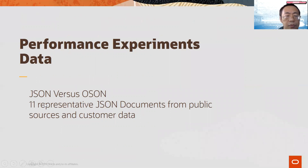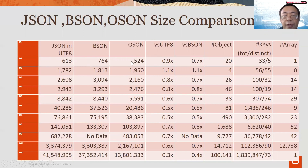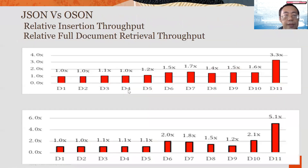Let's look at some performance data. We took 11 representative JSON documents from public sources and customer data. Comparing JSON text, BSON, and OSON sizes: when documents are small, the sizes are more or less the same. But as documents become medium to large, OSON clearly has a smaller size compared to both BSON and JSON. This is because OSON has a field name dictionary — field names are stored only once rather than repeated. For small documents, insertion and full document retrieval performance are similar between JSON text and OSON. But as JSON document size grows, OSON has a clear advantage in insertion and retrieval because OSON size is actually smaller than JSON.